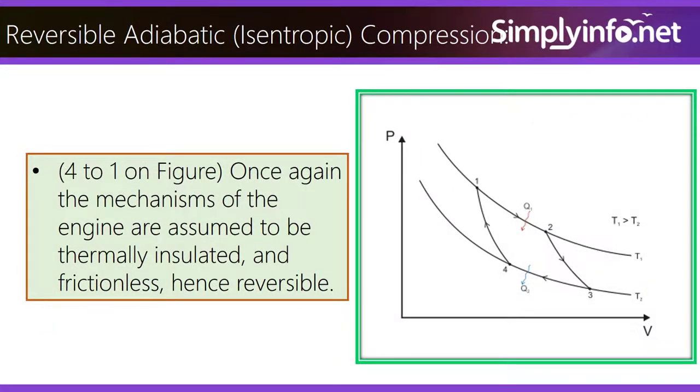Reversible Adiabatic Isentropic Compression: 4 to 1 on figure. Once again the mechanisms of the engine are assumed to be thermally insulated and frictionless, hence reversible.